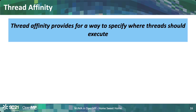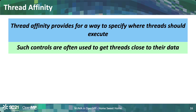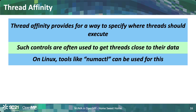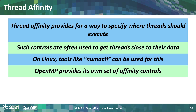Another thing I want to talk about is thread affinity. Thread affinity provides a way for you to specify where threads should execute, and you often use that to get your threads close to the data, to minimize memory access time. On Linux there are tools like numactl that you can use for this, but it's very high level — you probably need to go a level lower, and that's where OpenMP comes in. As I'll show in the second part, OpenMP provides very nice affinity controls to completely tell the system what you want to do. NUMA control can be used as a good sanity check to see if NUMA is an issue at all, but eventually you'll probably want the finer-grained control through OpenMP.